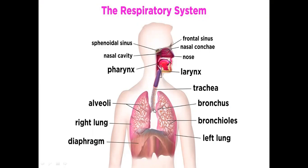We have two lungs — the right lung and the left lung. The trachea bifurcates into the right and left lung. And there is also a very important muscular organ called the diaphragm. The lungs and the physiology of the respiratory system are very important.